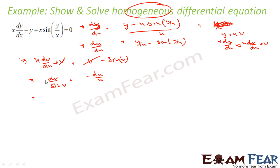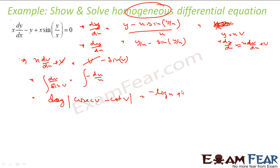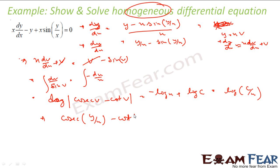So 1/sin v is cosec v, so cosec v·dv = −dx/x. If you integrate, this becomes log|cosec v − cot v| = −log x. Since everything is log, I will say log c instead of c, and this is nothing but log(c/x). You remove log from both sides and get cosec(y/x) − cot(y/x) = c/x. And that is my answer.